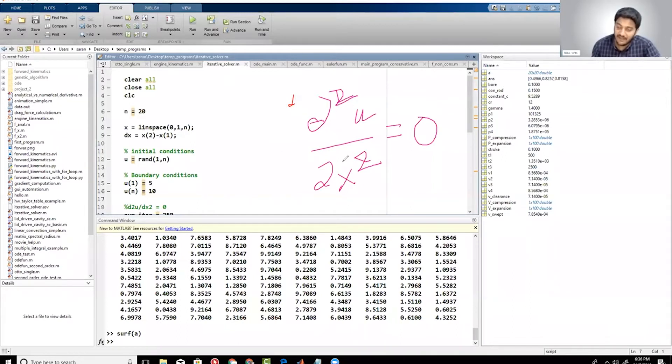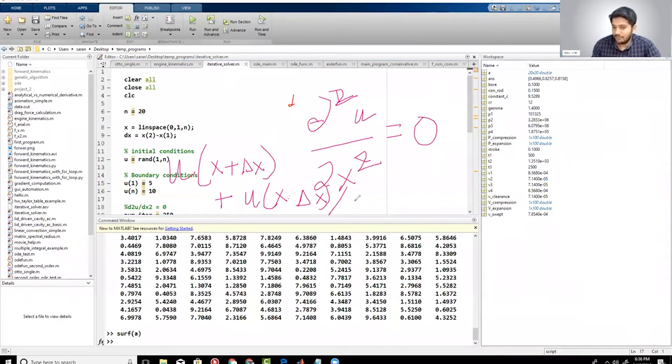I'm not going to go into the details, but the way you should discretize it, you will basically get u(x + Δx) + u(x - Δx) divided by 2. That would be the way to do it using numerical analysis.